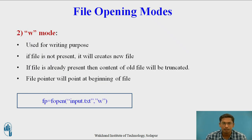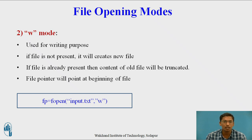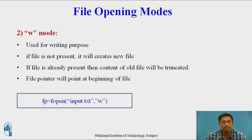The next file opening mode is w mode. It is used for writing purpose; reading is not possible with w mode. If the file is not present, it will create a new file — this is the key difference between r mode and w mode. In r mode it returns null, but in w mode it creates a new file. If the file is already present and you open it in w mode, then the content of the old file is truncated, meaning deleted. The file pointer will point at the beginning of the file. Example: fp = fopen("input.txt", "w").